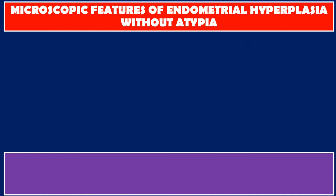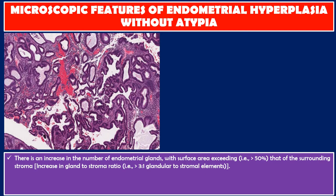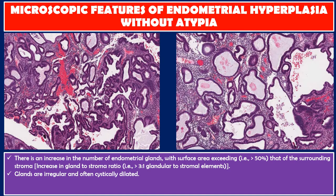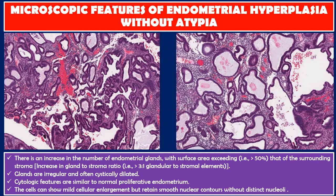Microscopic features of endometrial hyperplasia without atypia: here in this photo, we see an increase in the number of endometrial glands, with the surface area exceeding more than 50% of the surrounding stroma, and an increased gland-to-stroma ratio of more than 3 to 1. Glands are irregular and often cystically dilated. Cytologic features are similar to normal proliferative endometrium; the cells can show mild cellular enlargement but retain smooth nuclear contours without distinct nuclei.